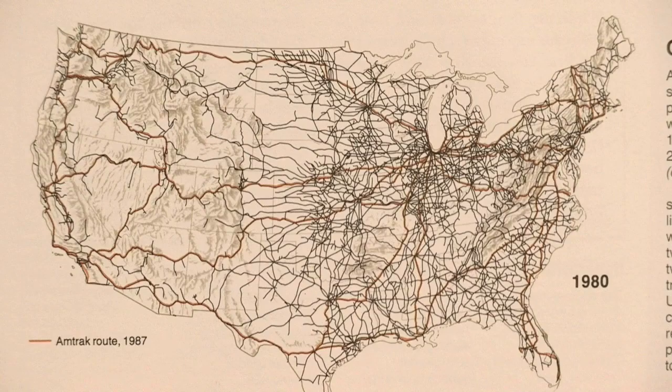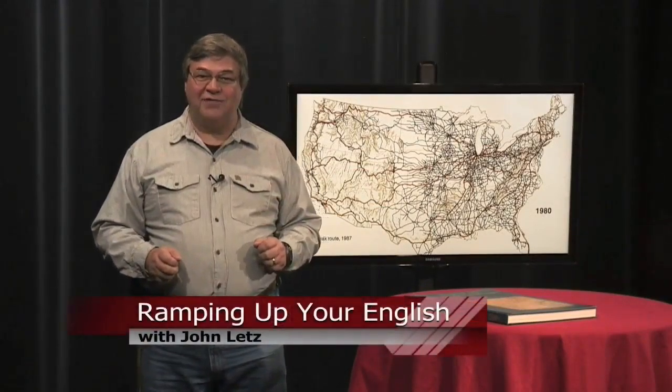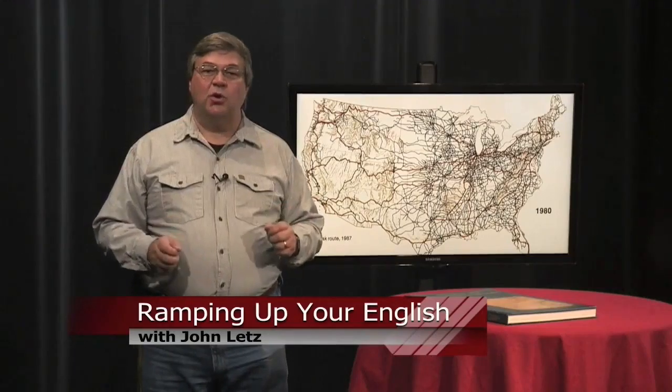The atlas also contains regional maps of the United States. If you want to see graphic illustrations of railroad history, get your hands on a copy of National Geographic's Historical Atlas of the United States. You can probably find one at your local library. For Ramping Up Your English, I'm John Letts.